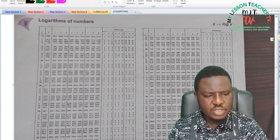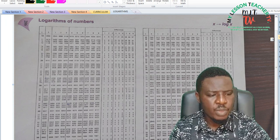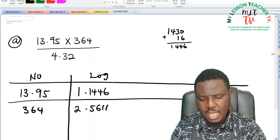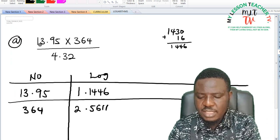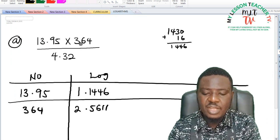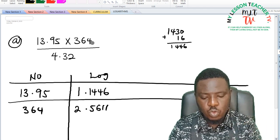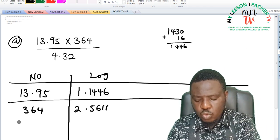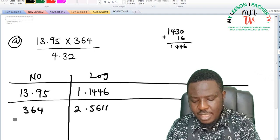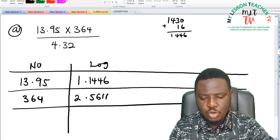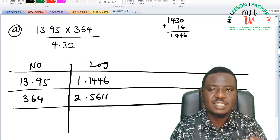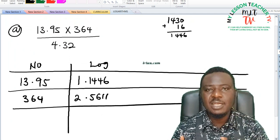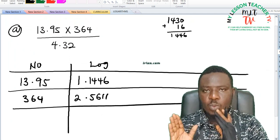Difference 0, there is no difference 0, so difference 0 is only 0. Now that I have done the numerator, that is I have converted 13.95 and 364 to logarithm, what you have to do is to thereafter multiply the numerator because we have to multiply 13.95 times 364.